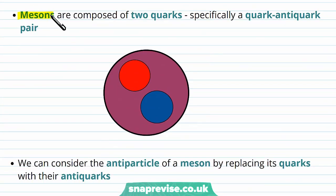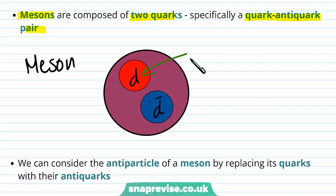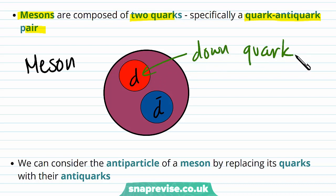Mesons are composed of two quarks, specifically a quark-anti-quark pair. Here is an example of a meson: we've got a down quark along with an anti-down quark.